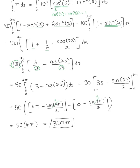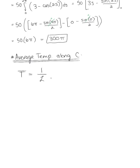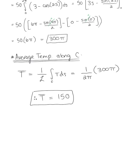We should be mindful that 300π is not our final answer — we're looking for the average temperature along the boundary. The average temperature T-bar equals 1 over L multiplied by the line integral. The circumference L is 2π, so we have 1 over 2π multiplied by 300π. Therefore, the average temperature of the plate along its boundary is 150.